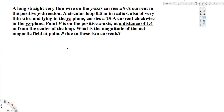Let's look at this problem. A long straight very thin wire on the y-axis carries a 9 ampere current in the positive y direction. A circular loop of 0.5 meter radius, also of very thin wire and lying on the yz plane, carries 15 ampere current clockwise in the yz plane. Point P is on the positive x-axis at a distance of 1.4 meters from the center of the loop. What is the magnitude of the net magnetic field at point P due to these two currents?